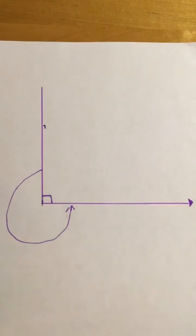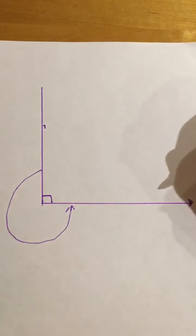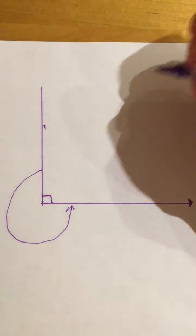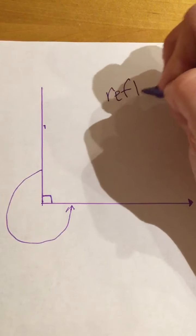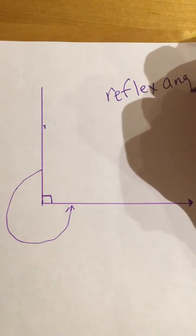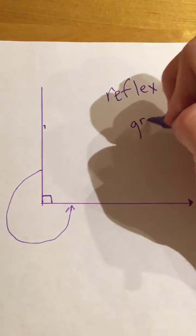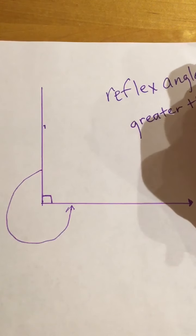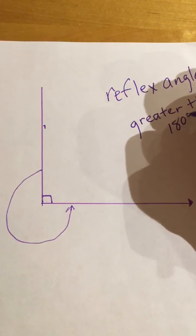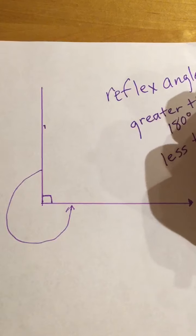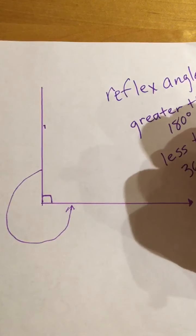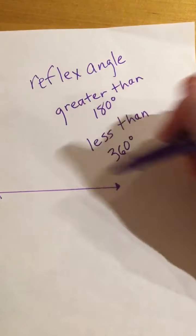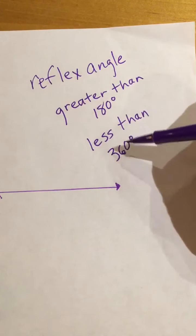The new angle I'm going to teach you about is called a reflex angle. A reflex angle is greater than 180 degrees but less than 360 degrees. When you're thinking about 360 degrees — a full circle — your reflex angle is greater than 180 and less than 360.